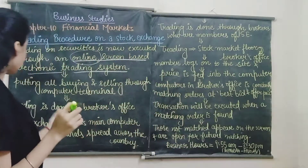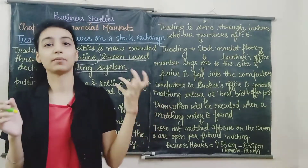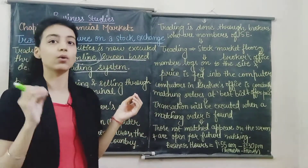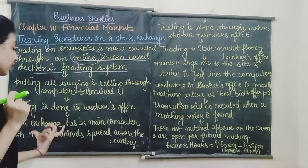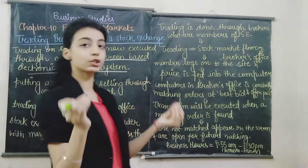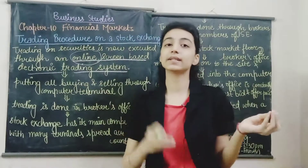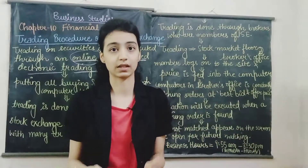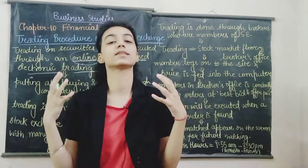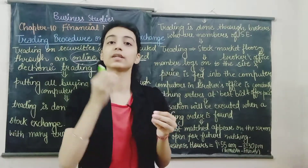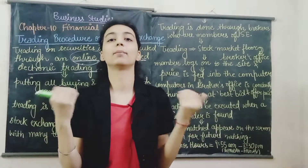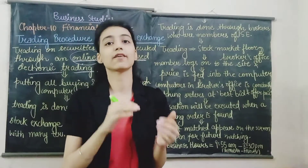Trading is done in the broker's office, where the main computer is located and all the trading of securities takes place. The stock exchange has its main computer with many terminals spread across the country. The broker's office is where all the dealings happen, where matching orders are processed, and the other terminals are spread across the country and the world. We just add our information, connect to our broker, and our conditions will be fulfilled.